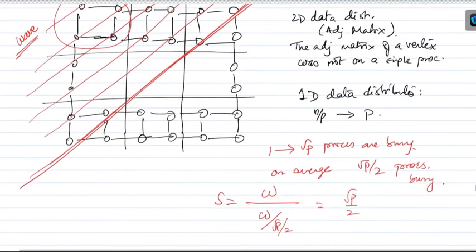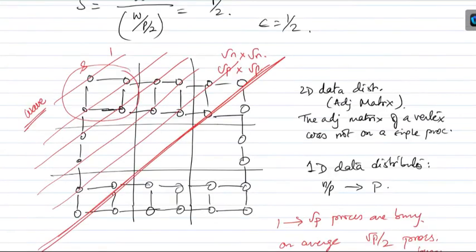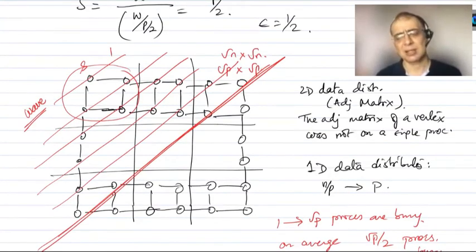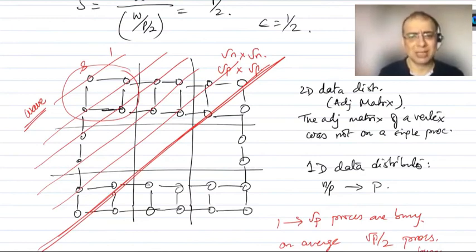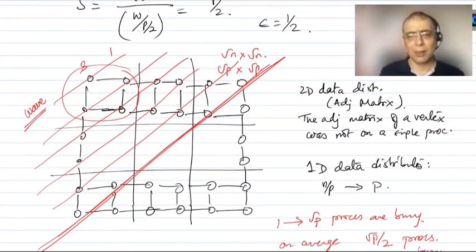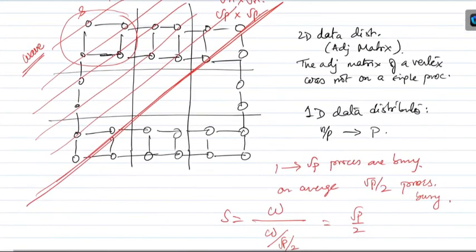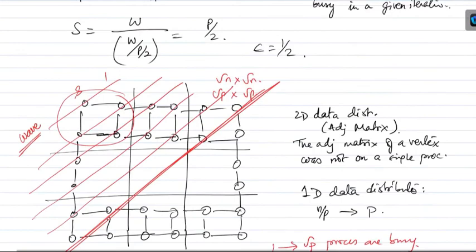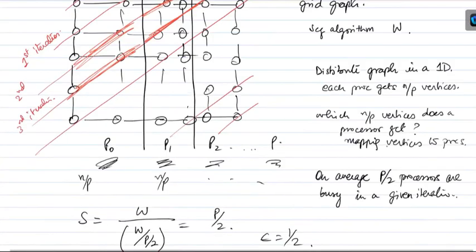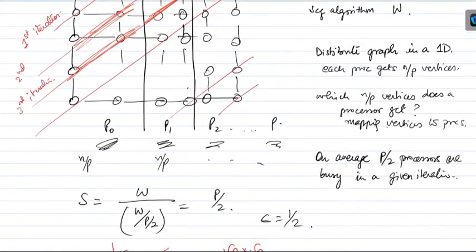This is a very specific graph; we are just taking it as an example to show what kind of speedup you get in practice. This is not a theoretical result — in practice you won't find grid graphs exactly. But it gives you some idea that you can get very good speedups in practice if you employ these kinds of algorithms. If you look at that 1D data mapping, you get speedups of P/2, which is very good — constant efficiency.